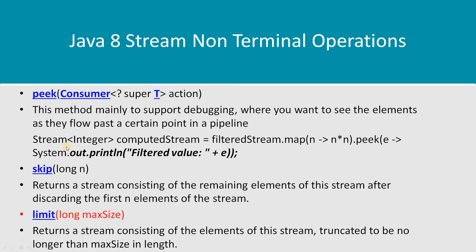Next is skip. As the name suggests, it skips the first N elements from your input stream. For example, if you have a stream of 10 integer numbers, you specify the count N and the first N elements are skipped. Next is limit — limit is used to break the infinite generation of elements and control the number of elements you want to generate.